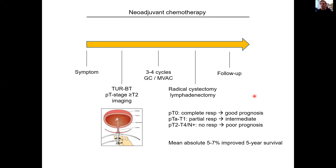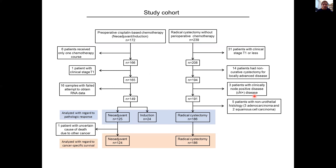The mean absolute benefit of neoadjuvant chemotherapy is only about five to seven percentage points in five-year survival. However, for patients who achieve a complete pathologic response, the benefit can be the difference between life and death. We performed a retrospective cohort study collecting all patients from southern Sweden who received neoadjuvant cisplatin-based chemotherapy, plus a reference cohort of radical cystectomy patients who received surgery without prior chemotherapy. After exclusions, we had 124 molecularly profiled neoadjuvant patients and 186 in the reference cohort.